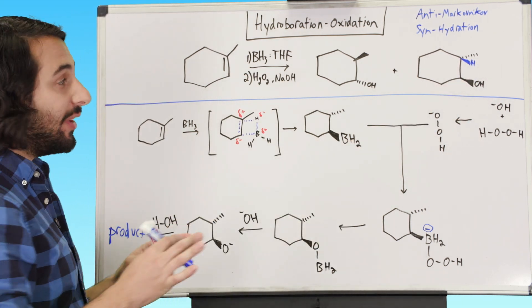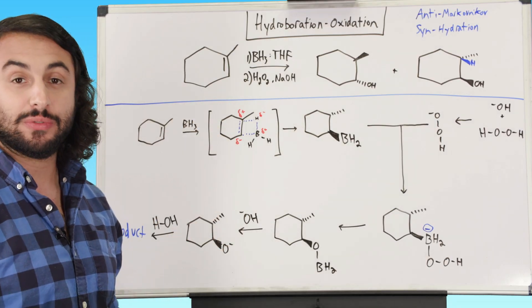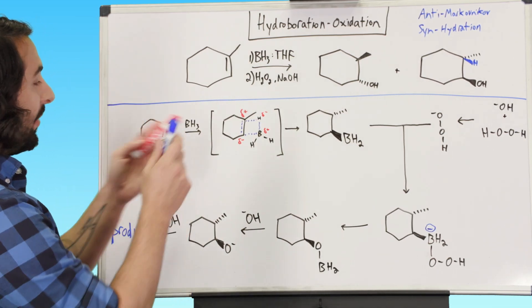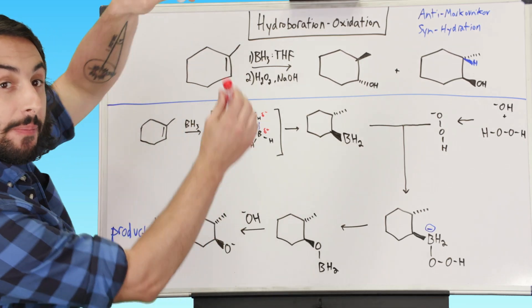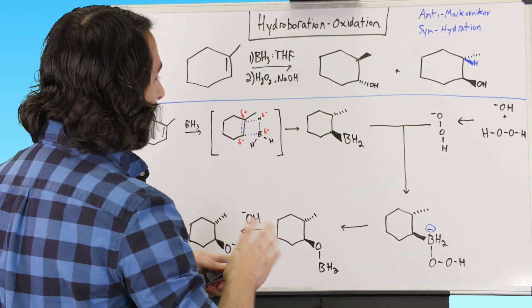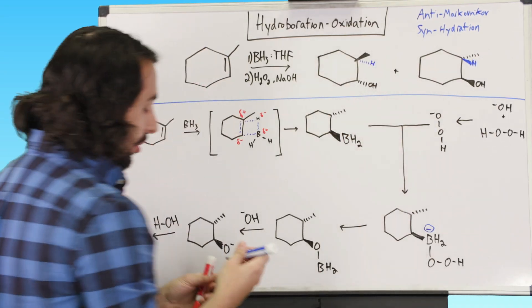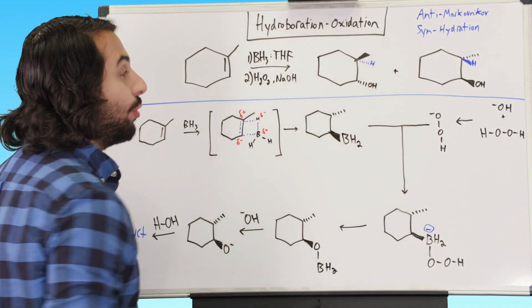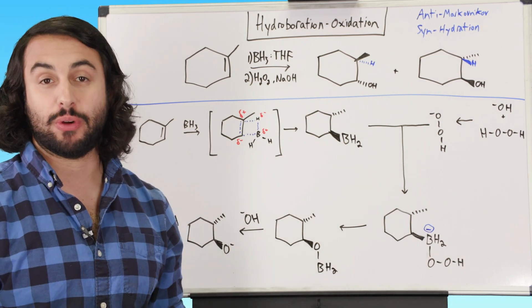There is often some confusion — people think that if it's syn, the methyl ought to be cis to the hydroxyl in the product. That's not the case. We are referring to the two groups that we are adding to the molecule, that's the H and the OH. Although there is stereospecificity in that it is syn, we still will get a mixture of stereoisomers, because the H and OH can also come from the back — which would give us a product where those are cis to one another, and the methyl would get pushed forward.